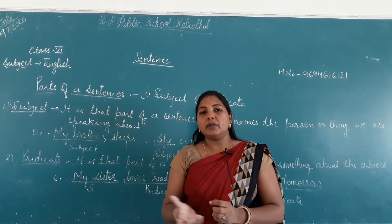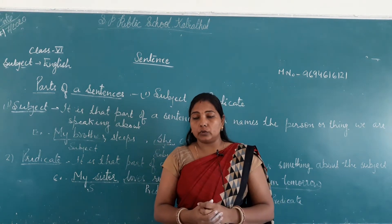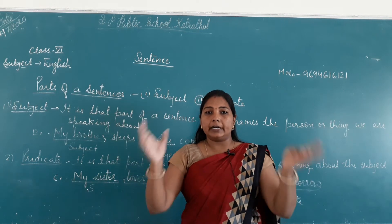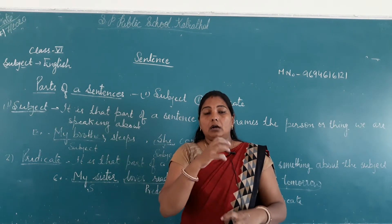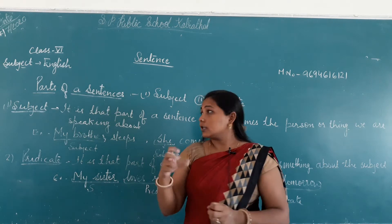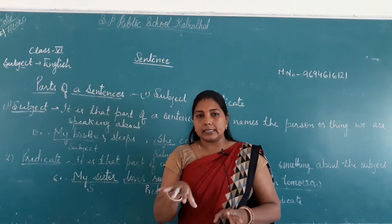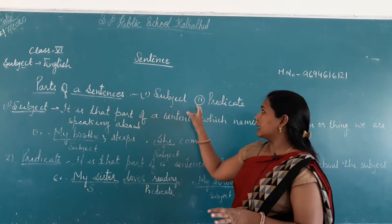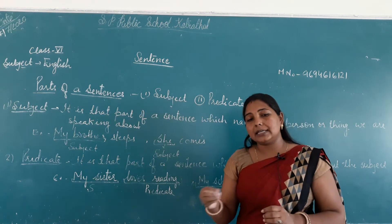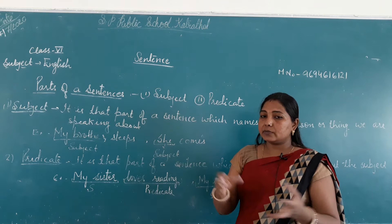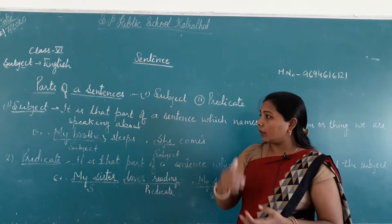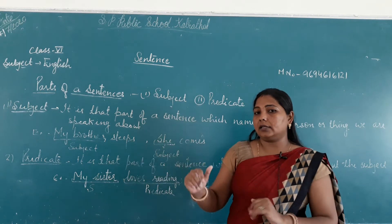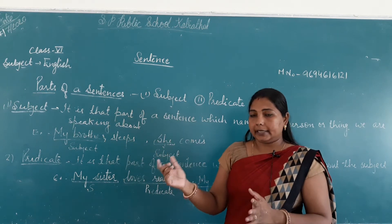Sentence हमने पढ़ लिया लेकिन उसके parts of sentence क्या होती हैं — यानि अगर हमारे सामने एक sentence लिखा जाए और identify किया जाए कि how many parts are in this sentence, so you can identify: first is subject and second is predicate. तो आप बता सकते हो कि one is subject and another is predicate.